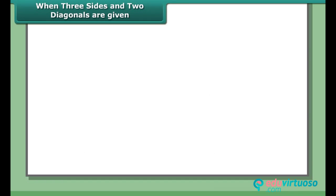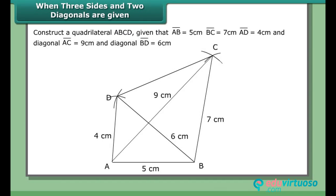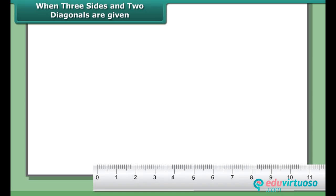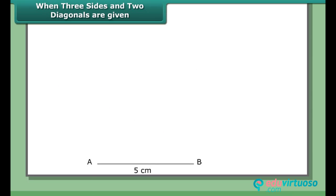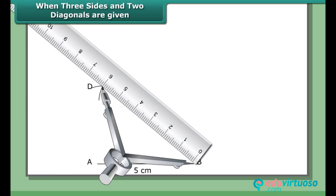When three sides and two diagonals are given, construct quadrilateral ABCD given that AB = 5.6 cm, BC = 7.6 cm, AD = 4.6 cm, diagonal AC = 9.6 cm, and diagonal BD = 6.6 cm. Draw arcs to cut each other at point D.